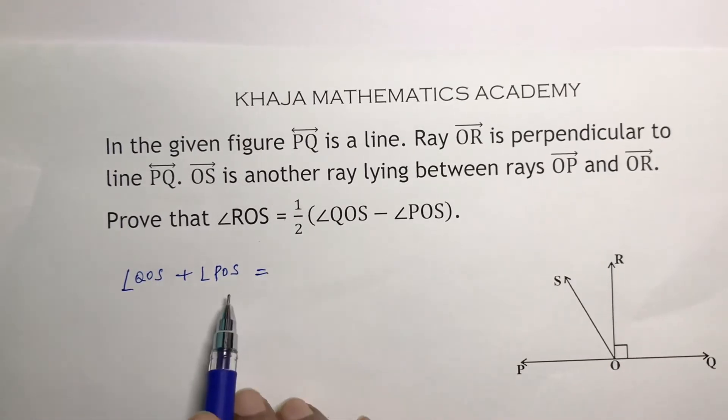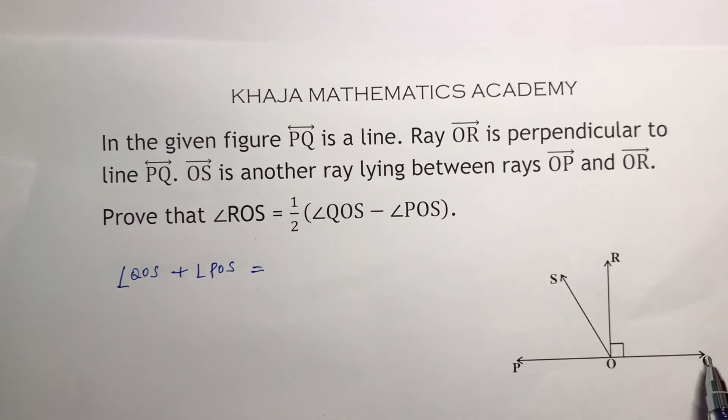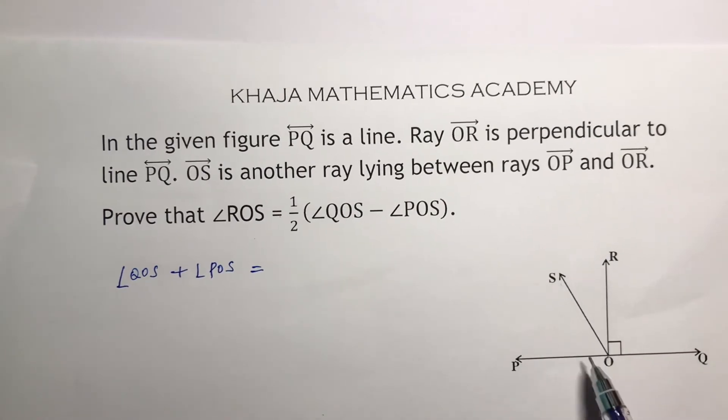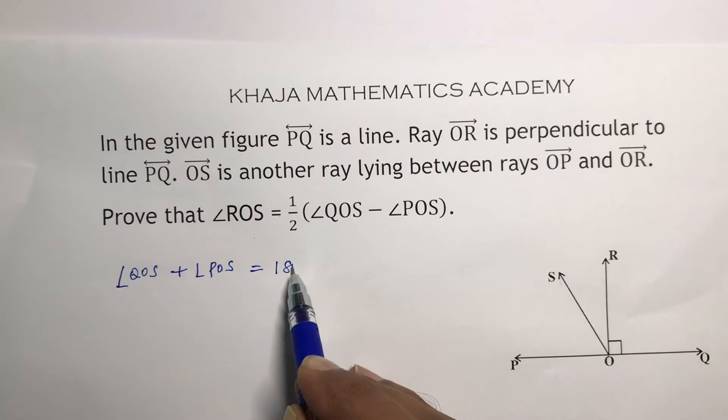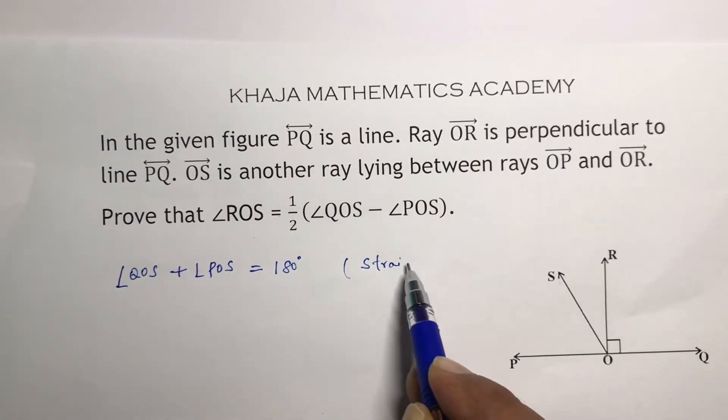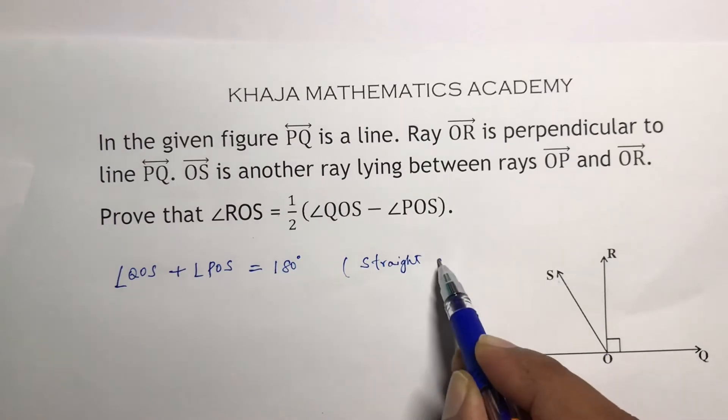QOS plus POS, if you will observe in the diagram, this total angle will be 180 because of straight angle. Or you can write linear pair because only two angles, straight angle.